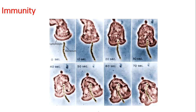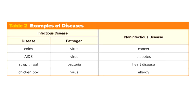The third line of defense protects your body against substances that have infected the body before. As we have learned, immune cells make antibodies that destroy harmful substances. Vaccines are also used to help the body develop antibodies against infectious diseases. For example, many people get an influenza vaccine annually to protect against the flu.